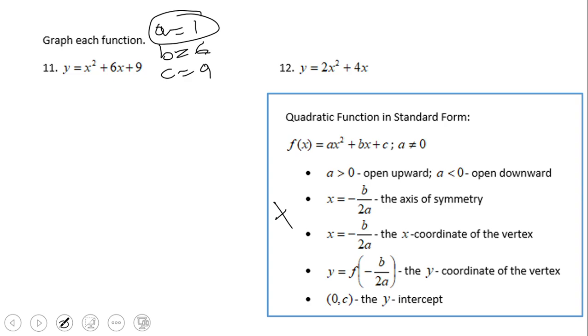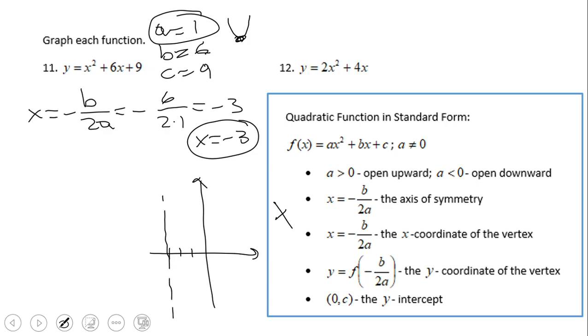Again, a is positive, which tells us the parabola is open up, so we're going to have a minimum. The first thing we're going to do is the quotient x equals negative b over 2a. That will give us negative 3. So again, be careful of this negative sign. That will be the axis of symmetry.